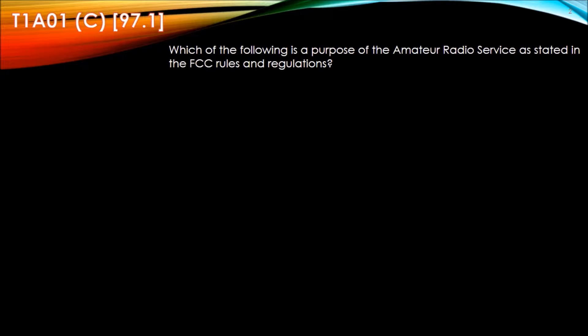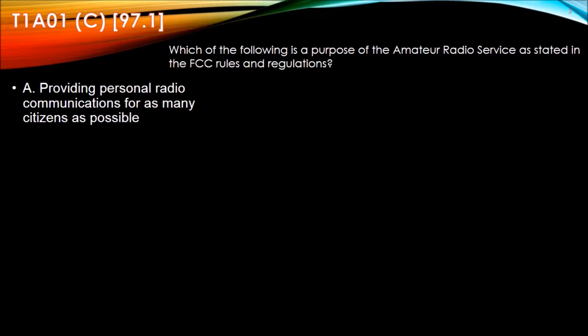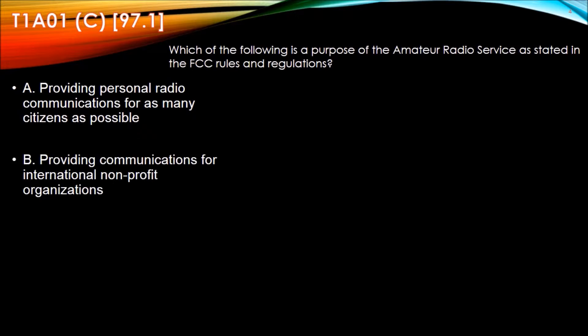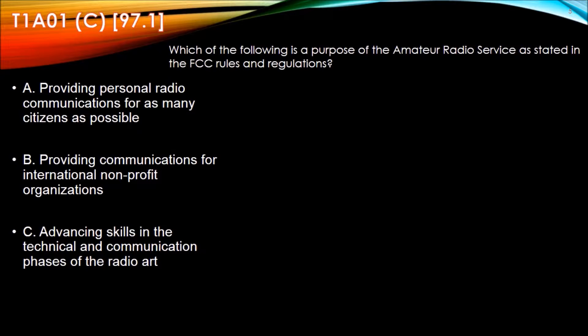Question T1A01: Which of the following is a purpose of the Amateur Radio Service, as stated in the FCC rules and regulations? A. Providing personal radio communications for as many citizens as possible. B. Providing communications for international non-profit organizations. C. Advancing skills in the technical and communication phases of the radio art. And D. All of these choices are correct.